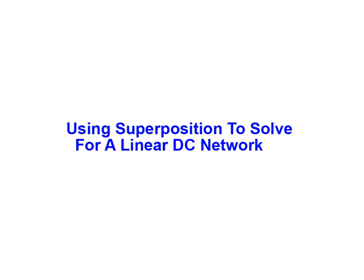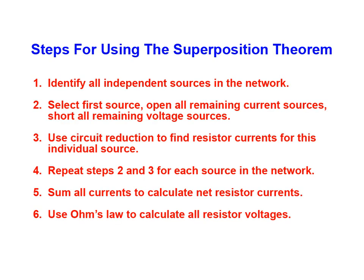In this animation we'll be using the superposition theorem to calculate resistor voltage and current for a linear DC network. There are six steps involved when utilizing the superposition theorem.